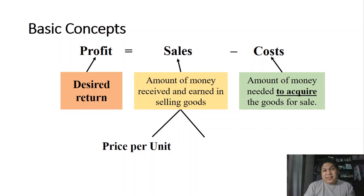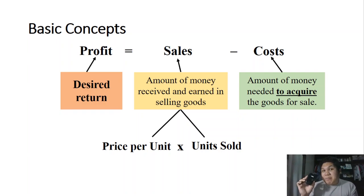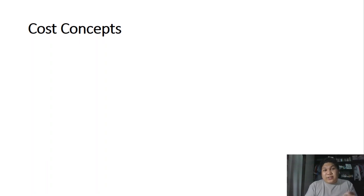Sales is computed as price per unit times units sold. When you sell more, you earn more. If selling one item gives 70 pesos profit, selling two gives 140 pesos, and selling 10 units gives 700 pesos. The more you sell, the more profit you get. Now let's focus on costs, because this is our main topic for today.